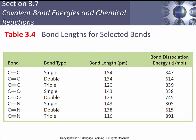Bond lengths also vary with bond order — the more bonds you have, the shorter and closer together the atoms are. A single carbon-carbon bond is 154 picometers, but a triple bond is 120 picometers. As bond order increases, bond dissociation energy goes up and bond length decreases.